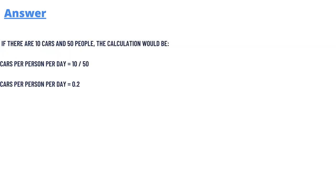The result is the number of cars per person per day. For example, if there are 10 cars and 50 people, the calculation would be 10 divided by 50. Cars per person will be 0.2.